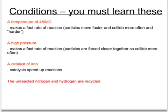A high pressure is used to create a fast rate of reaction as well. This forces the nitrogen and the hydrogen particles closer together so they collide more frequently. A catalyst is used because a catalyst speeds up a chemical reaction and the catalyst used is iron.